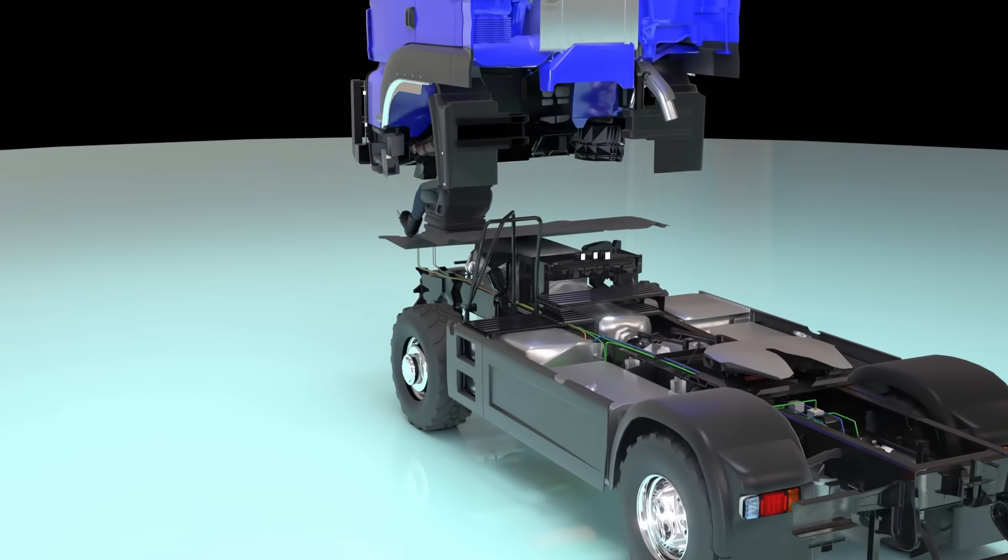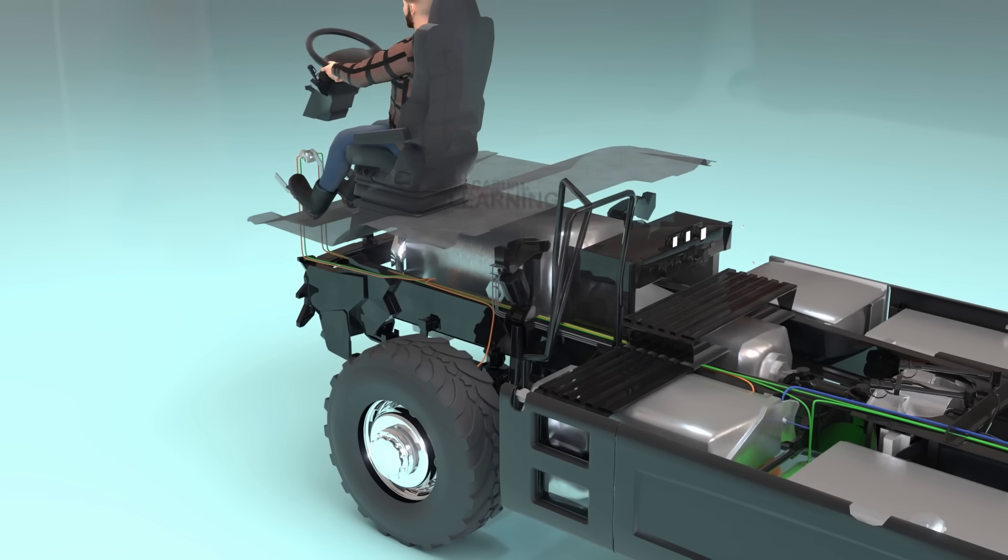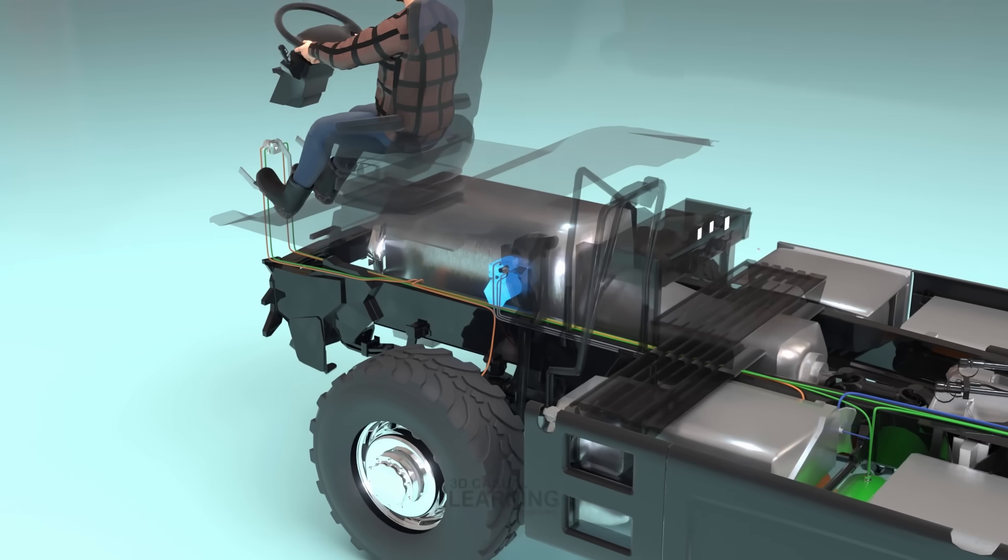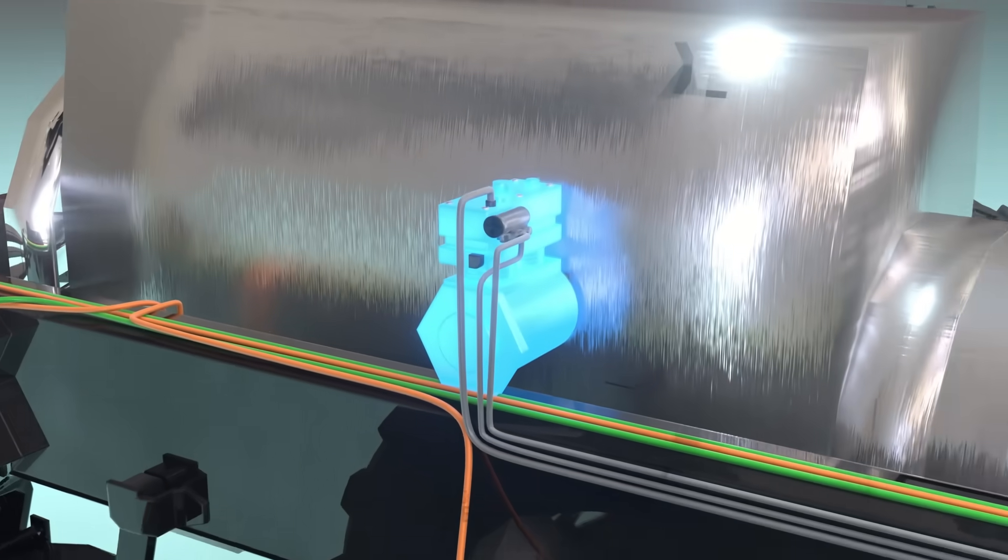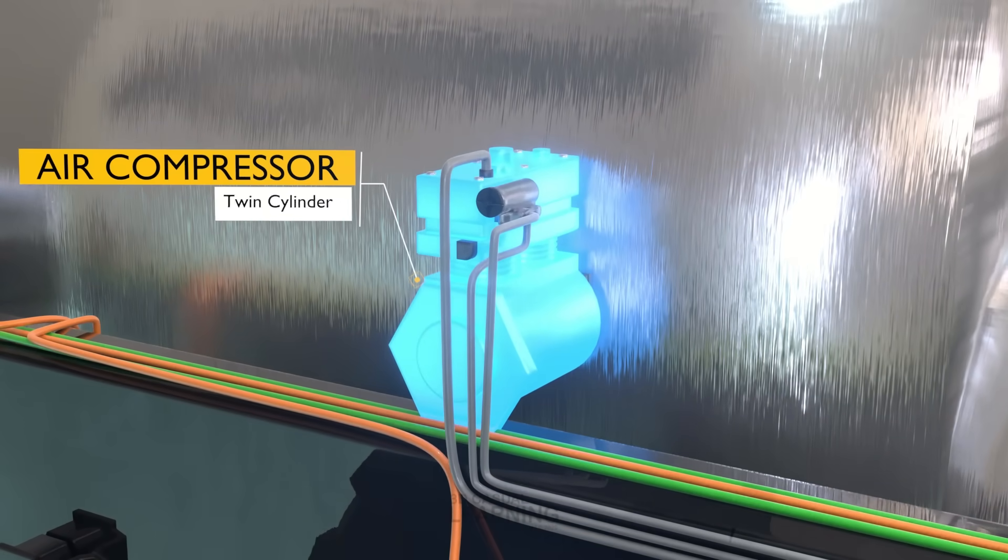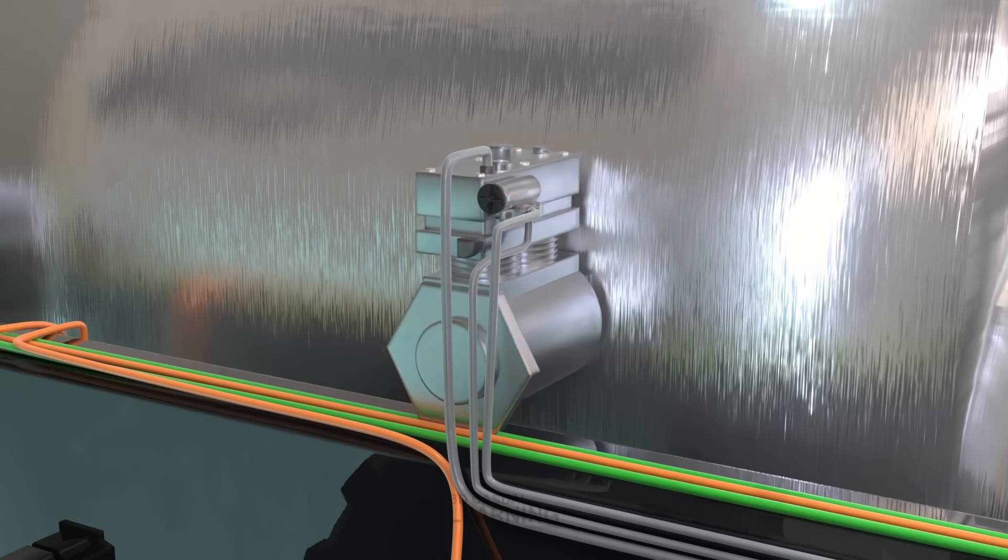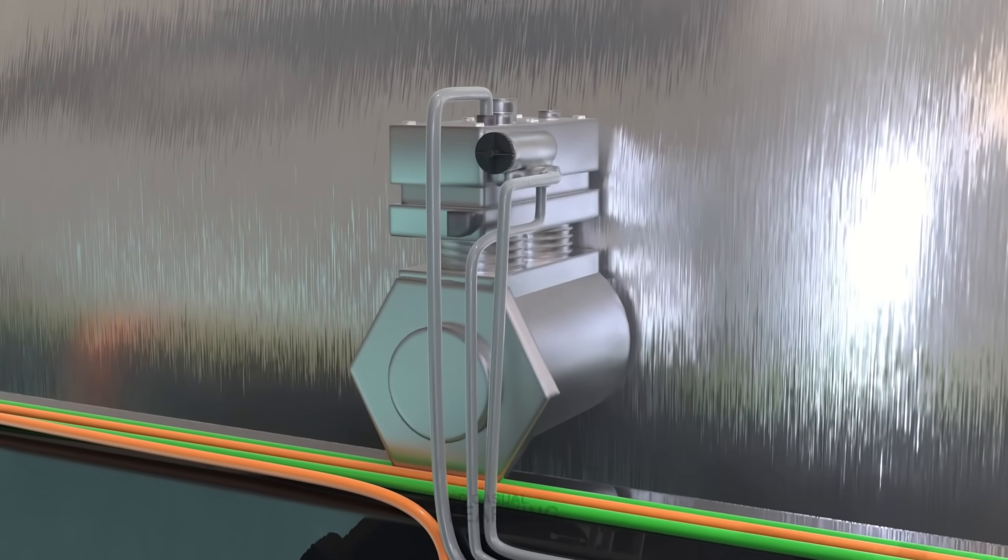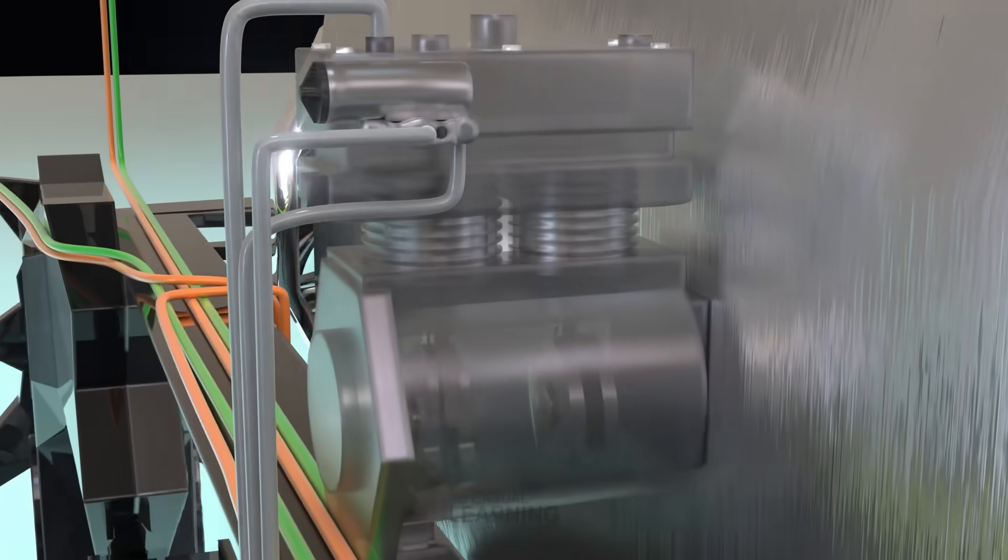Trucks have an engine-driven air compressor that continuously pumps air into the system. The compressor's crankshaft and connecting rod convert the engine's rotational force into a vertical linear motion, driving the pistons up and down, compressing air with every stroke and feeding it into the brake system's reservoirs.